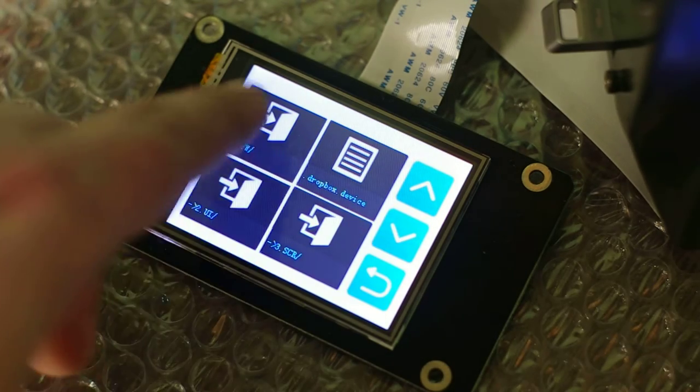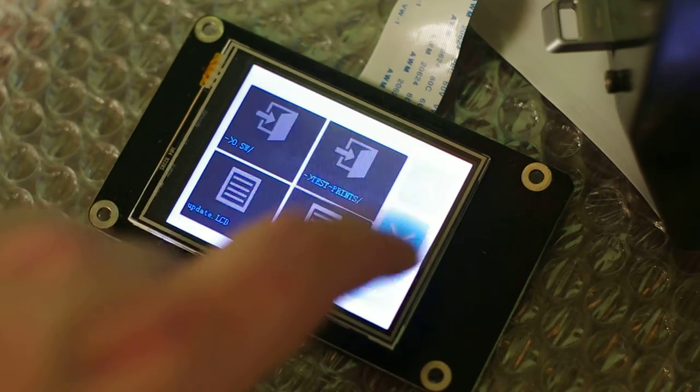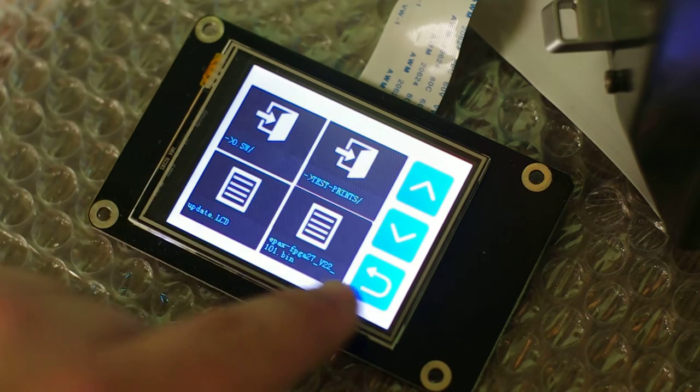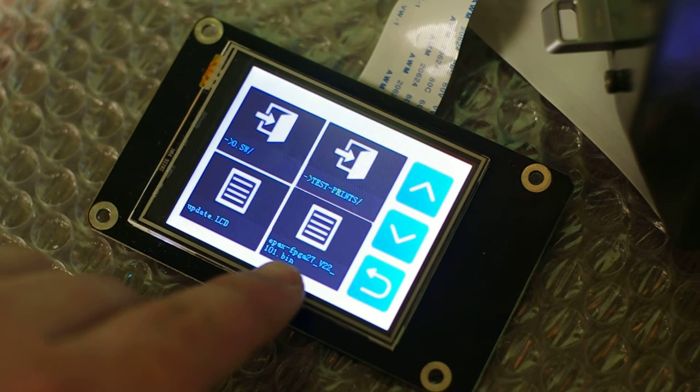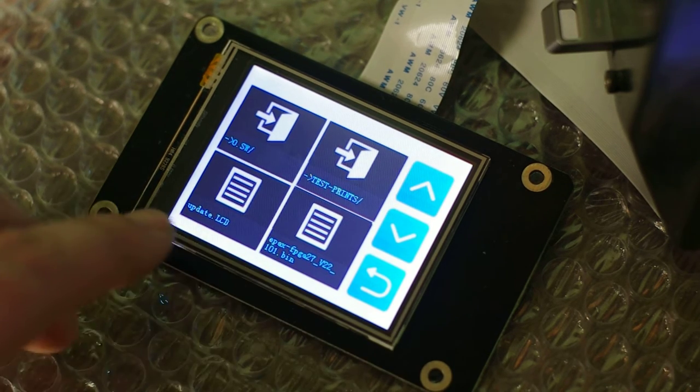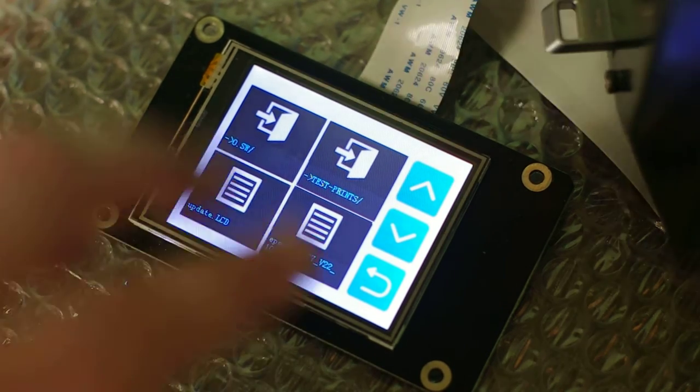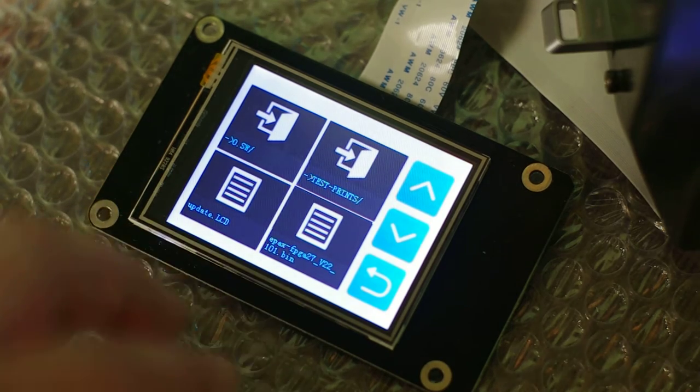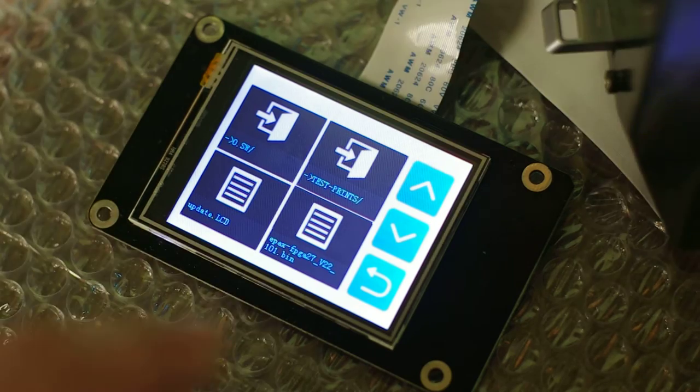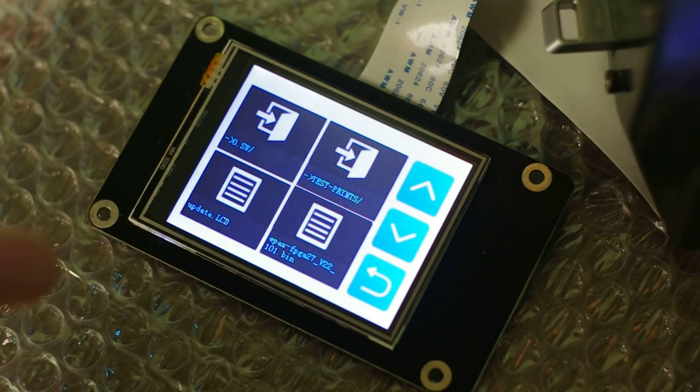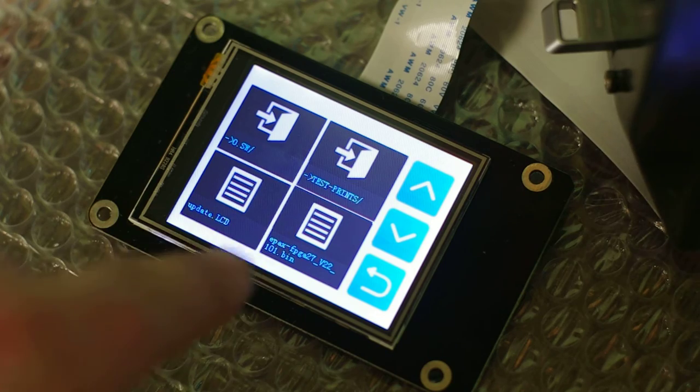The firmware, there's a couple of files that you put on the root of the USB. In this case it's this APAX FPGA and the update LCD. So we put these two on the root and then we restart the machine and it does a little music and it installs the firmware, and then we need to run the firmware again, print it and then update the LCD.